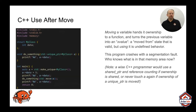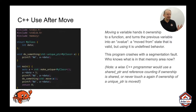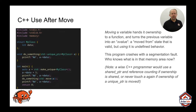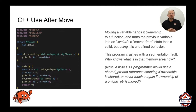Use after move doesn't exist in C because C doesn't have a move construct. C++ introduced it and caused a huge amount of confusion. When I ask all the C++ programmers in a hall to put their hand up if they really know what std::move does, there's usually silence or one or two people sheepishly putting up a hand.